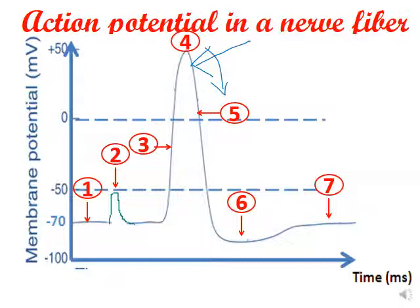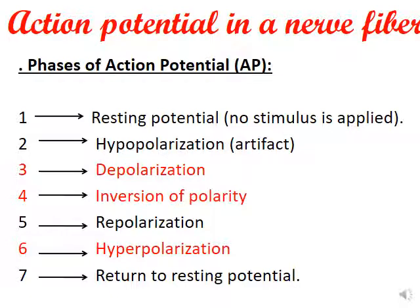Phase one is the resting potential at minus 70 millivolts where no stimulus is applied. Phase two is hypopolarization, a decrease in negativity, also called the artifact. Phase three is depolarization, moving from minus 70 to about plus 50 millivolts. Phase four is the inversion of polarity, moving from positive toward negative. Phase five is repolarization, going back to the negative.